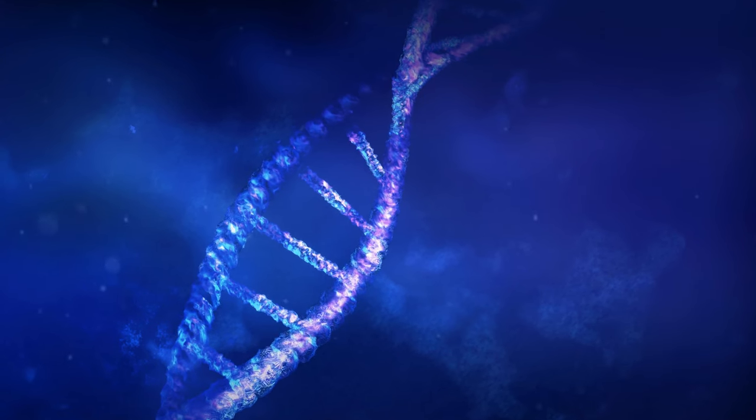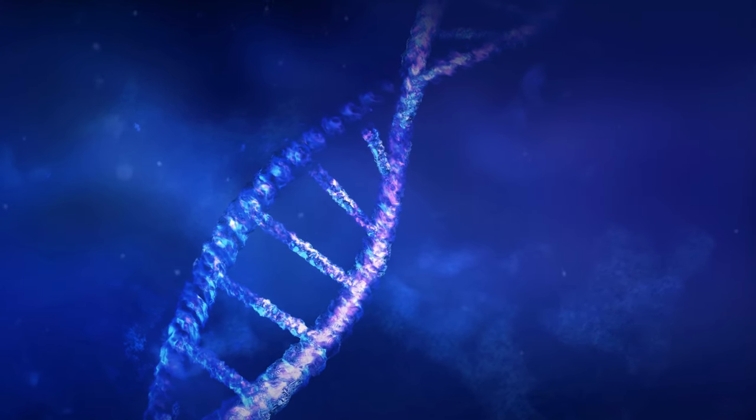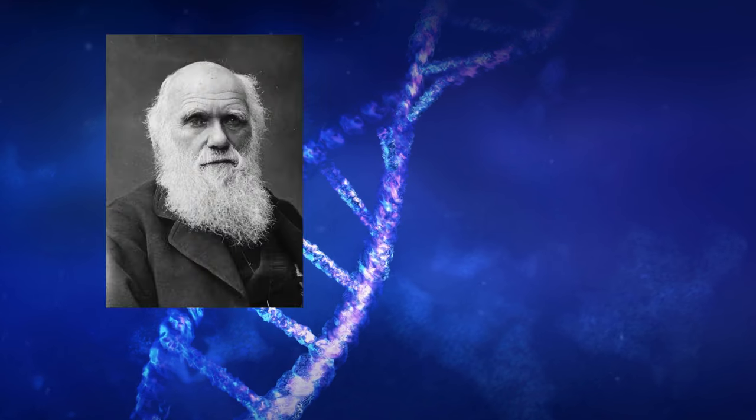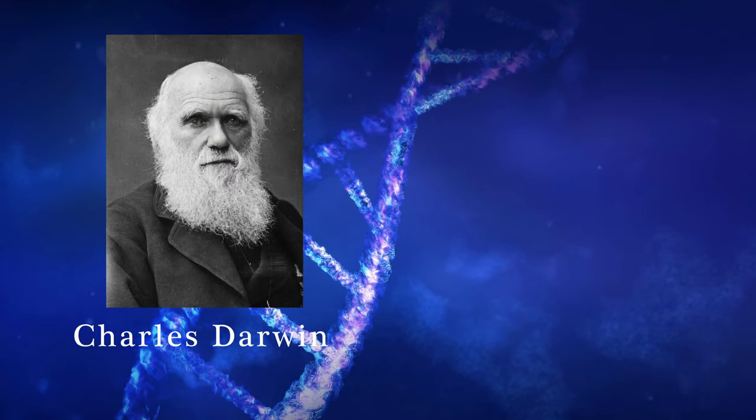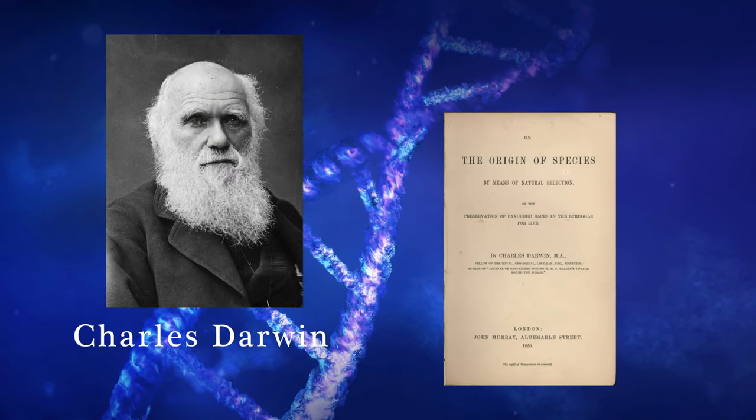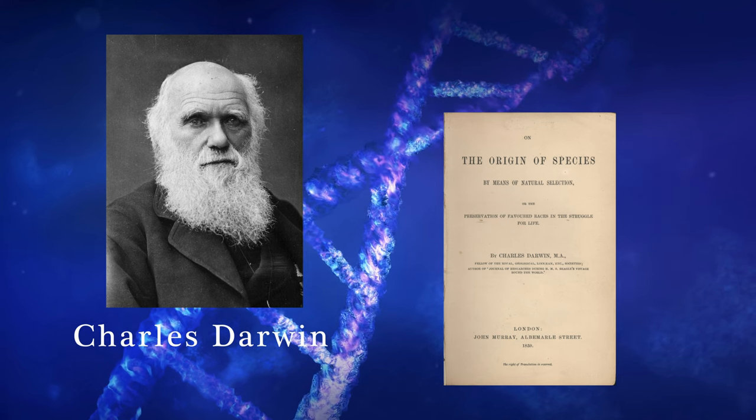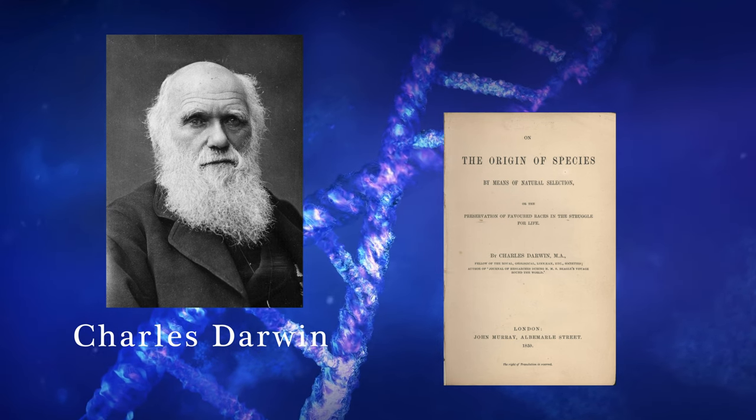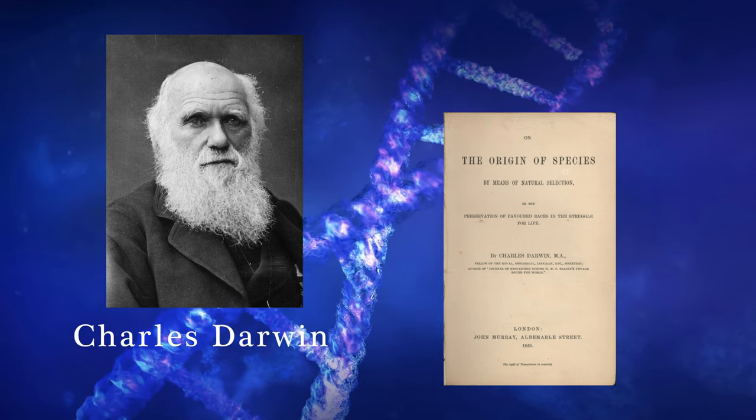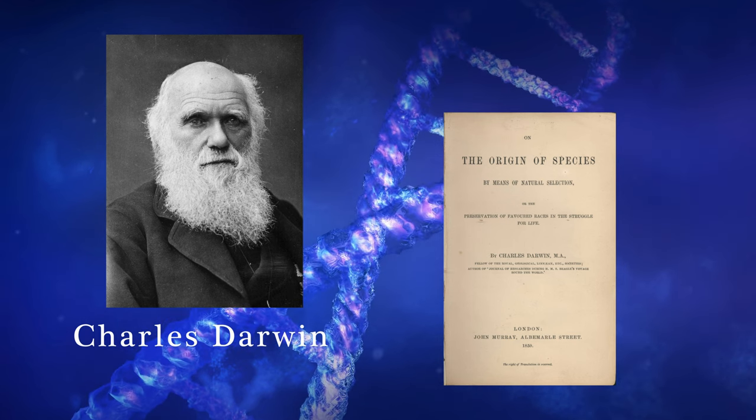The history of eugenics can be traced back to the mid-19th century with the release of Charles Darwin's groundbreaking book, The Origin of Species. This work established the foundation of evolutionary biology and many scientists sought to build upon Darwin's ideas.